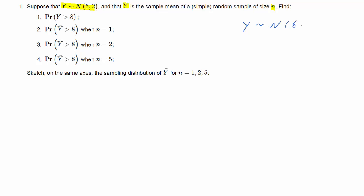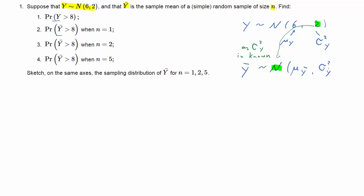Let's write down the information we have. Y is normally distributed with mean μ_Y = 6 and variance σ²_Y = 2. We also need to calculate probabilities for ȳ, so we need the distribution of ȳ. That's normally distributed because Y is normal and we know the variance of Y. If that weren't the case, ȳ would be t-distributed. ȳ has mean μ_ȳ equal to the mean of Y, and variance σ²_ȳ equal to the variance of Y divided by the sample size n.